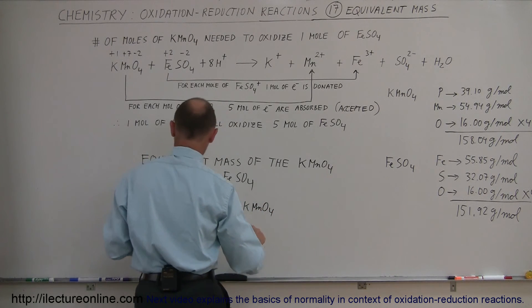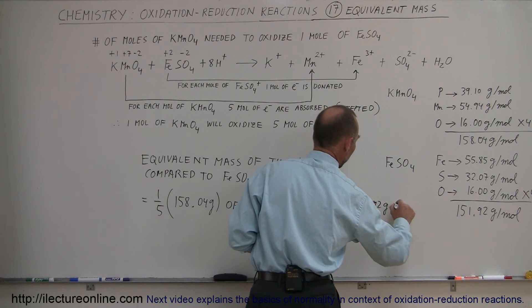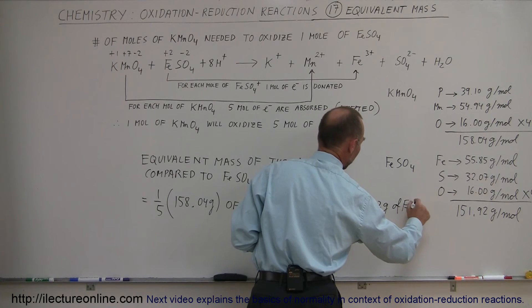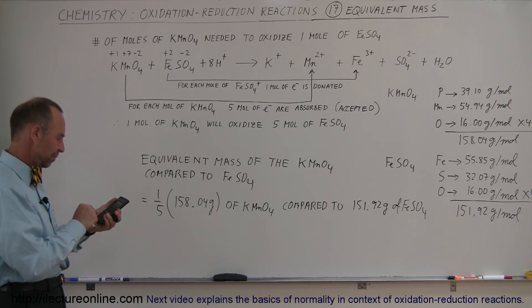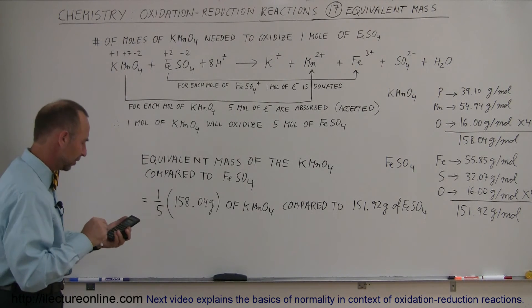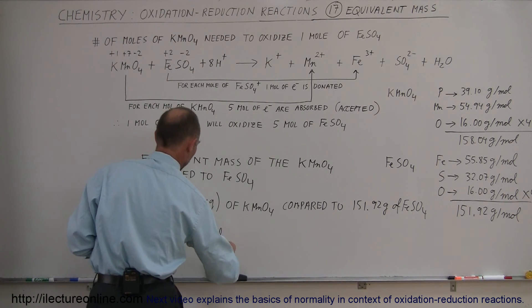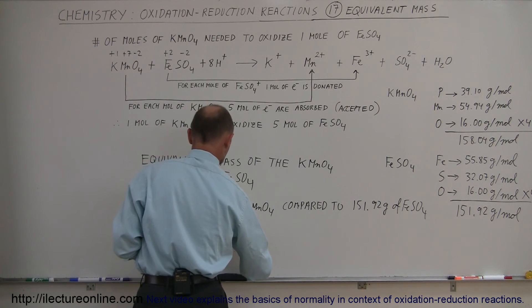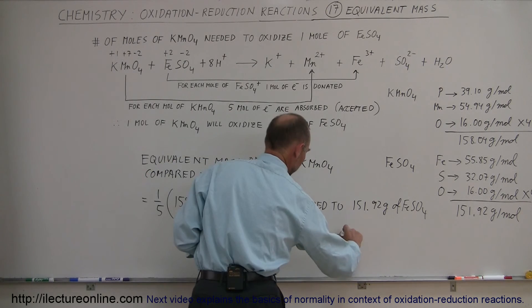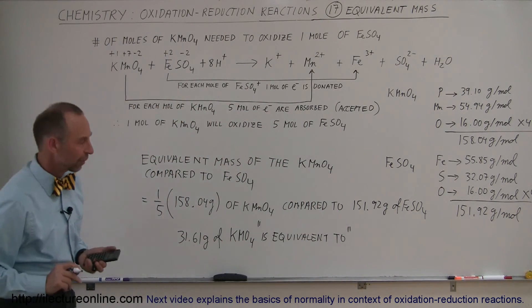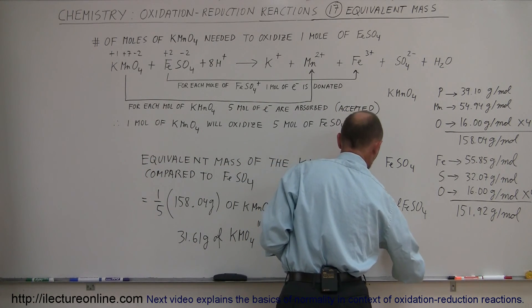What is 158.04 divided by five? 158.04 divided by five equals 31.61. So it would be 31.61 grams of potassium permanganate is equivalent to 151.92 grams of iron sulfate.